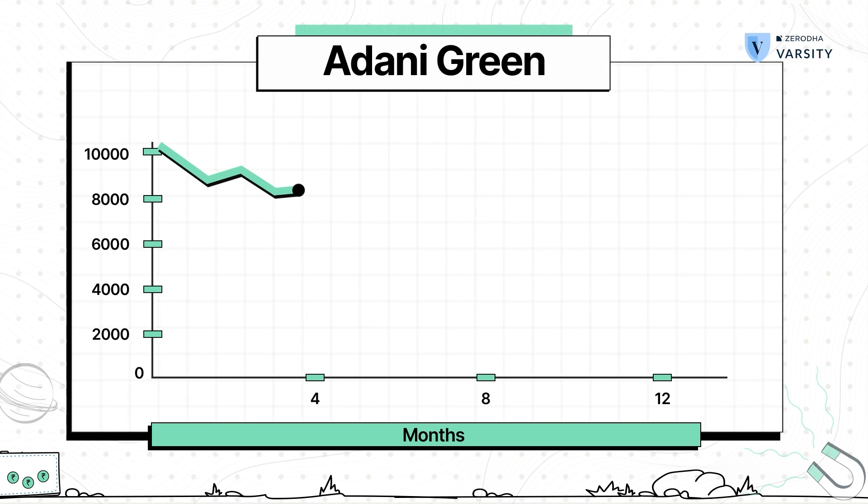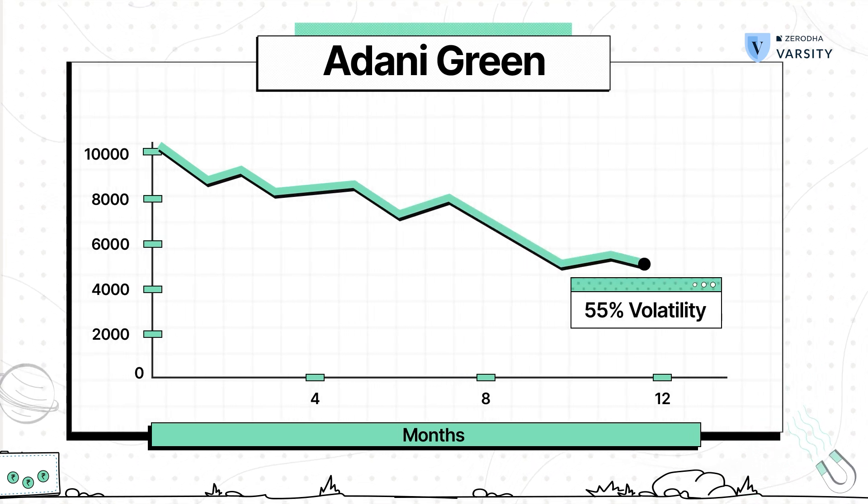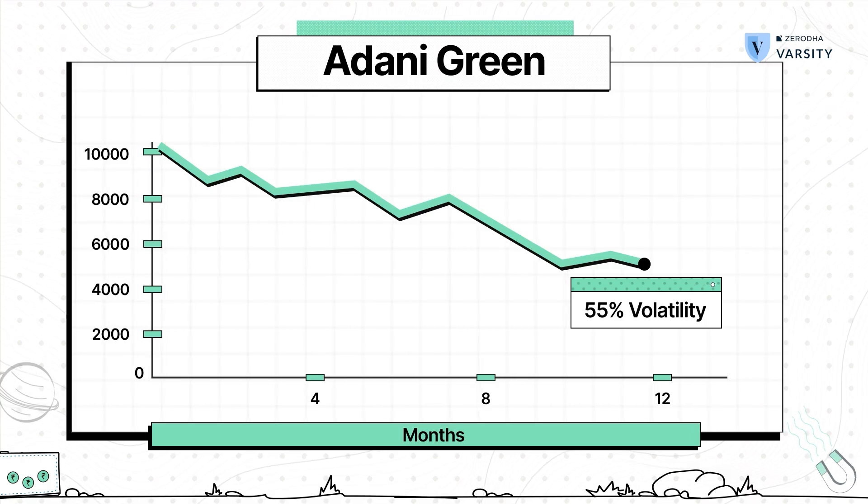As you can see, my single stock portfolio's risk or volatility is nearly 55%. This means over the next one year, my investment can go down as much as 55% with a certain degree of confidence. Let me go ahead and add another stock to this portfolio — in other words, let me diversify by making it a two-stock portfolio — and see what happens to the risk.